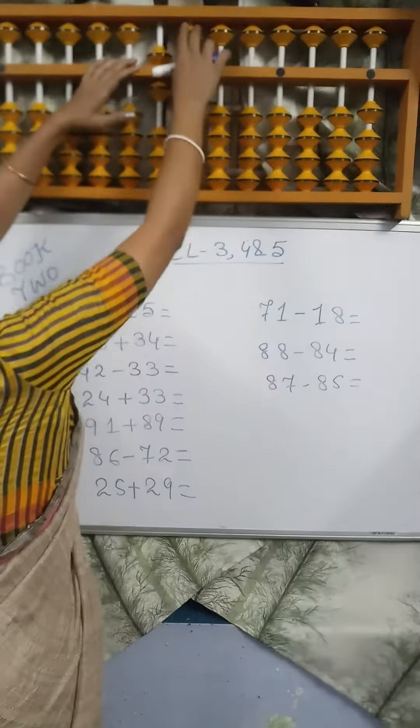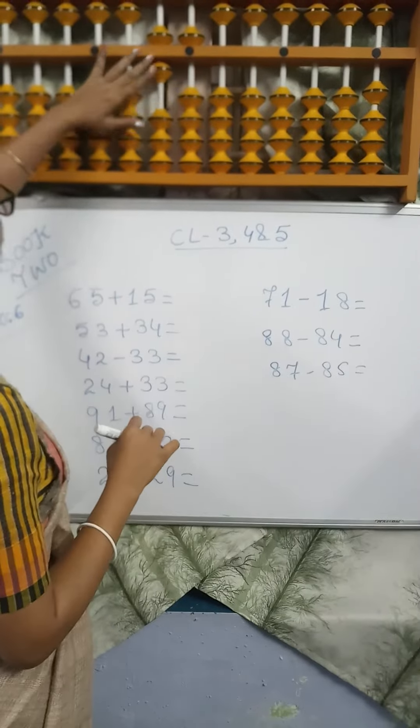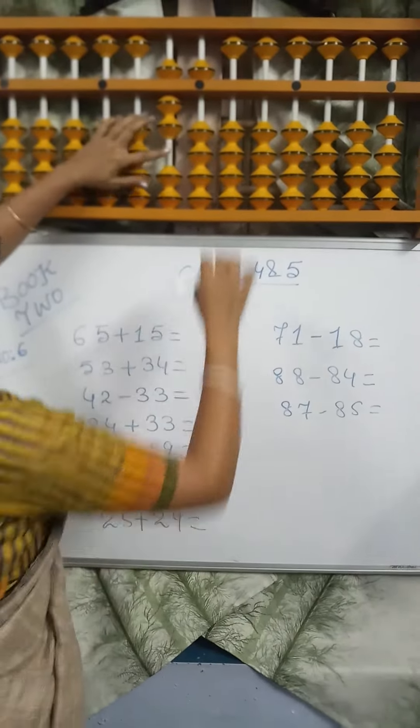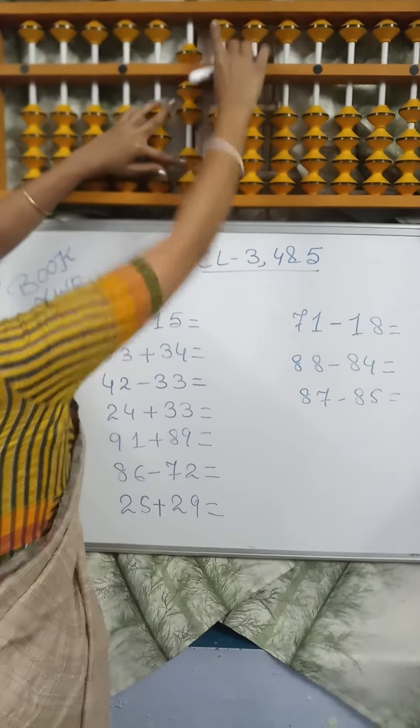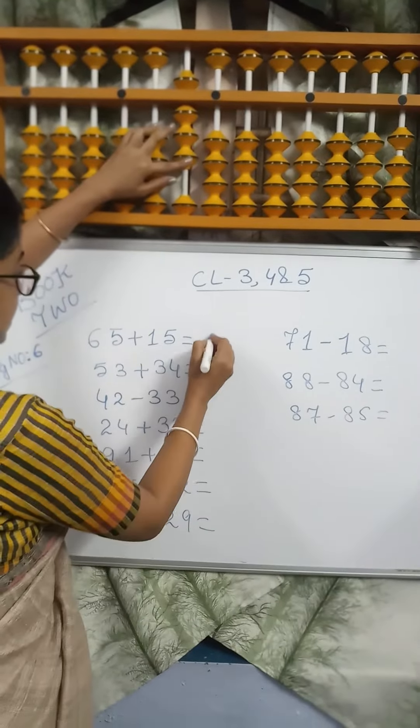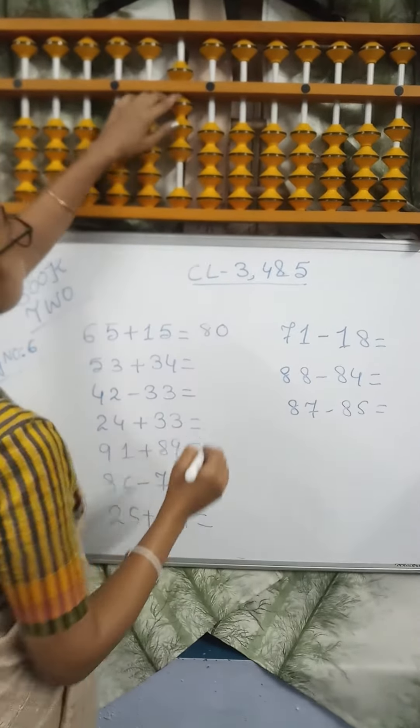65 plus 15. 1 for 5, minus 5 plus 10. Answer is 80. Next sum.